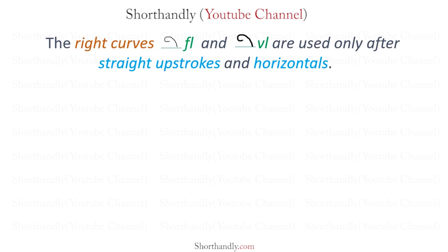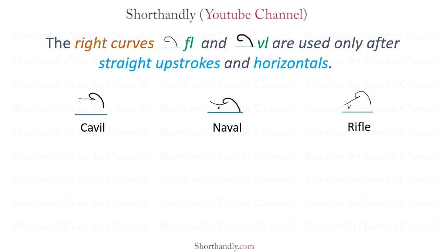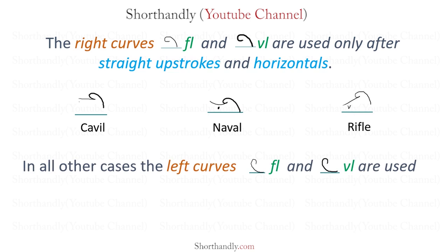The right curves Fl and Vl are used only after straight upstrokes and horizontals. For example, in the words Caval, Naval, and Rifle, the left curves Fl and Vl are used. For example, in the words Flow, Flake, and Arrival.